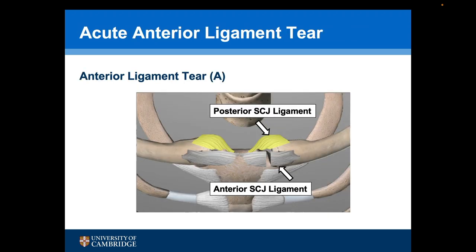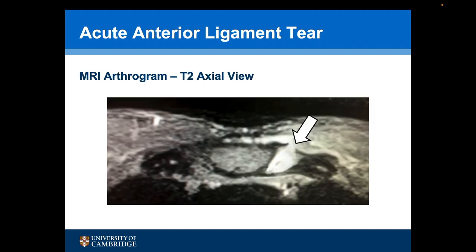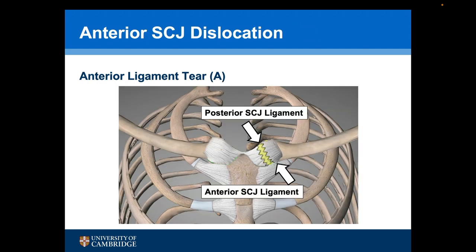The third injury pattern is where the anterior ligament has been torn acutely and the ends of the ligament are still present and are repairable, while the posterior ligament itself is intact. This is an MR arthrogram that shows the posterior ligament is intact, with dye escaping through the anterior ligament, but we can see the ends of the anterior ligament are present. In this situation I prefer to undertake a capsular repair which is augmented with an internal brace device that will protect the repair.